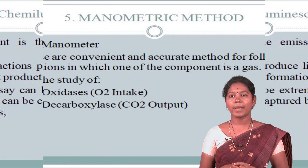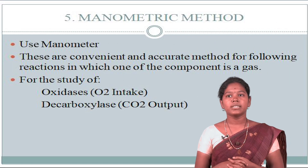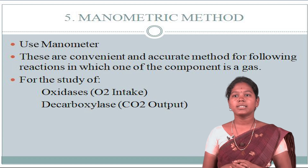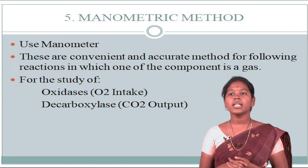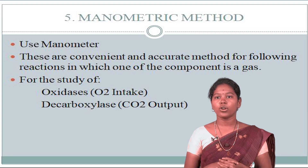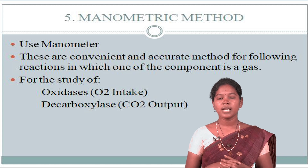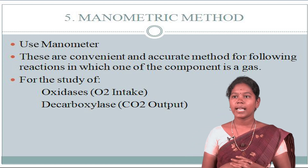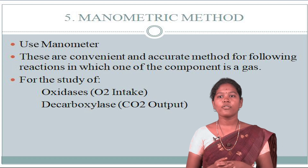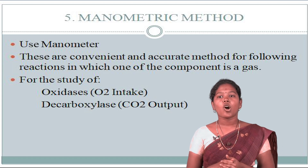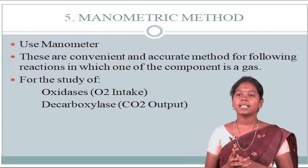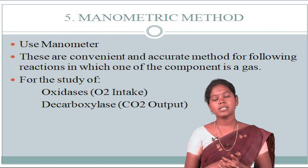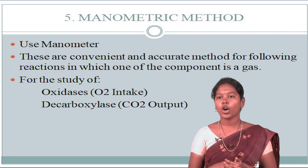The fifth method is the manometric method. This assay uses a manometer and is a convenient and accurate method for following reactions in which one of the components is a gas — used for the study of oxidases and decarboxylases. Oxidase involves the uptake of oxygen; decarboxylase involves the output of carbon dioxide.